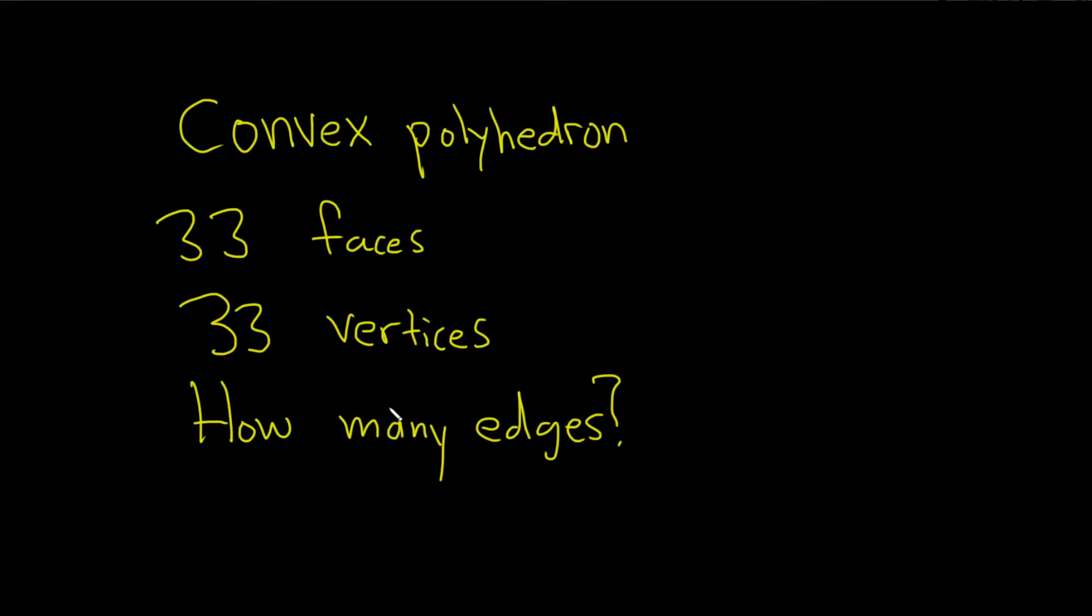In this problem, we have a convex polyhedron, and we're told it has 33 faces and 33 vertices. And the question is, how many edges do we have?